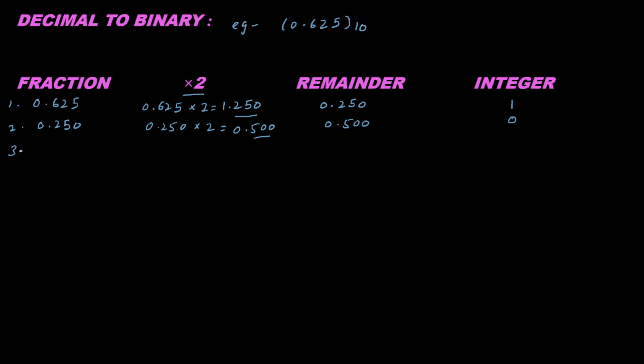Now write 0.500 here. If I multiply 0.500 by 2, I get 1.00, so the remainder is 0.00 and integer is 1. This is MSB, the most significant bit, and this is LSB.